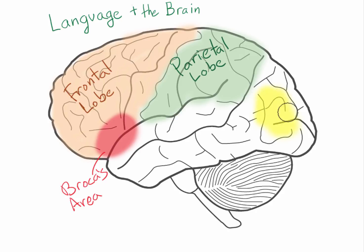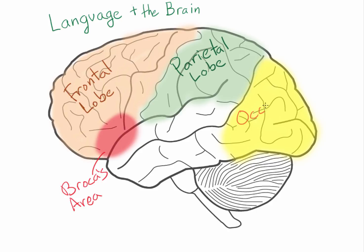Next we have the occipital lobe. The occipital lobe is generally for visual processing. So when you're reading or writing, obviously you're using your occipital lobe — not only reading and writing, but also sign language, where being able to see is very important. And also reading people's lips. You might think you can't read lips, but it's actually really important to be able to look at a person's face and see their facial cues, their gestures, their body language.